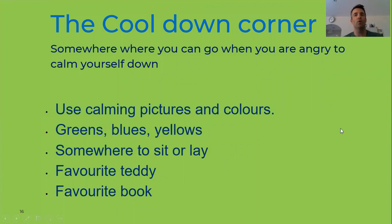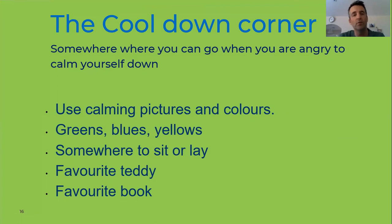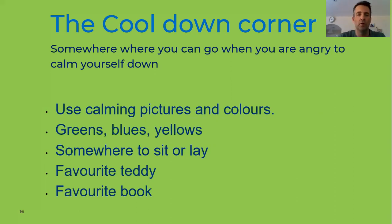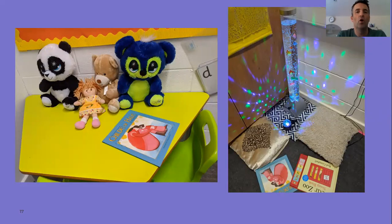The cool down corner is somewhere you can go when you are angry — an area where you can go to calm yourself down. In the cool down corner you might want some calming pictures and colors. Calm colors are greens, blues, or yellows — probably staying away from reds, which is more of an alert or anger color. You'll also need somewhere to sit or lay down, a favorite teddy, or possibly a favorite calming book.